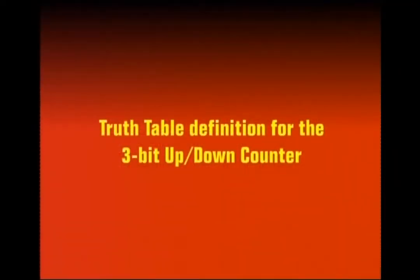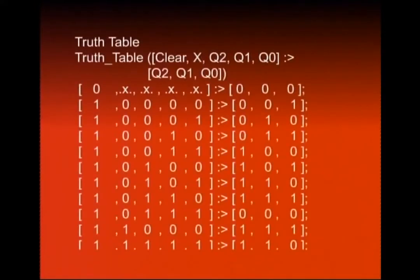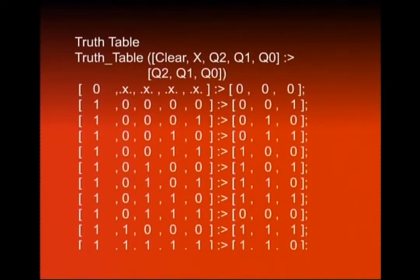Table mein 2 table definitions hain for the 3-bit up and down counter. Sabse upar humne jo 5 inputs hain — clear input, X input, Q2, Q1, Q0 inputs — basically jo sequential circuit hai uska next state determine hoga external inputs aur present state se. Present state define hogi Q2, Q1, Q0 state variables se. Output pe Q2, Q1, Q0 next state variables represent hain. Pehli row mein clear jab 0 hai — X don't care, present state jo marzi ho — output next state 000 hogi kyunke clear asynchronous input 0 pe hai.